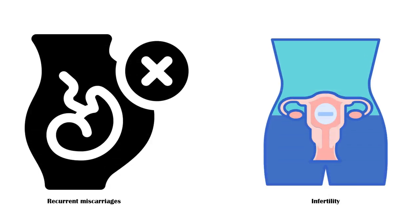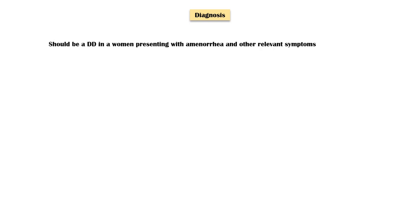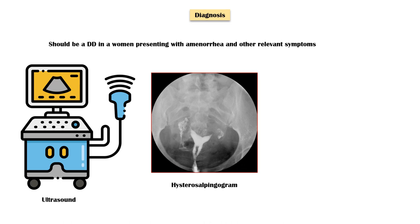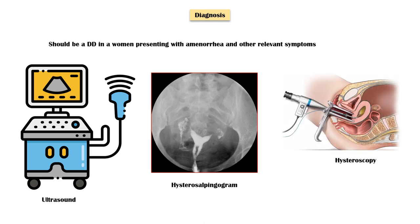Most individuals will also have recurrent miscarriages and infertility. As far as the diagnosis is concerned, Asherman syndrome should be a differential diagnosis in a woman presenting with amenorrhea and other relevant symptoms. Ultrasound scan and hysterosalpingogram will also provide some clues on adhesive disease. Hysteroscopy is the gold standard test for diagnosing Asherman syndrome.